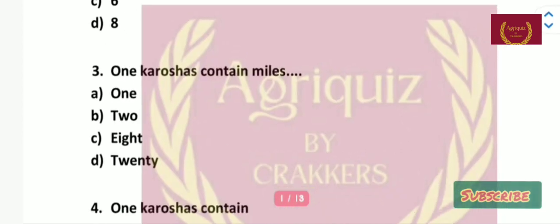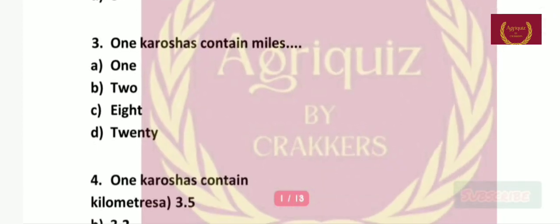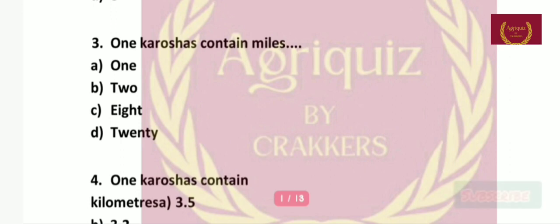Question number 3: How many miles does one Croosh contain — 1, 2, 8, or 20? The correct answer is 8.